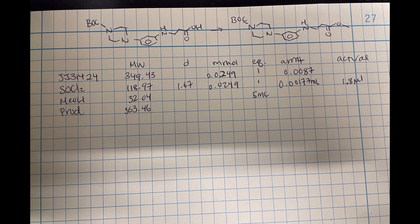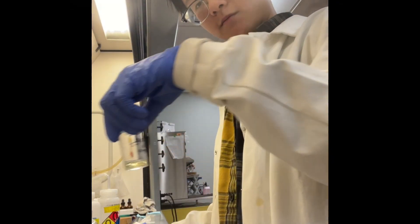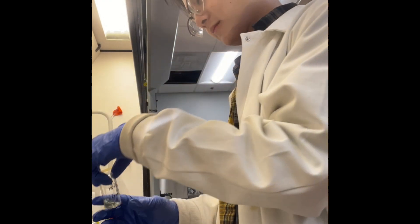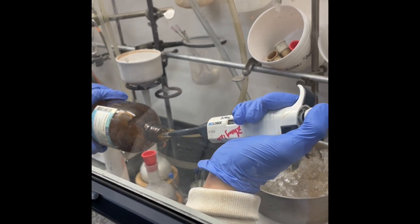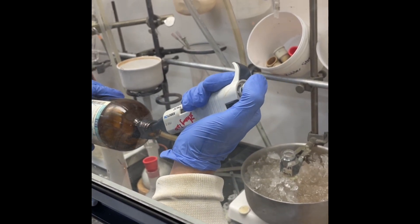So this is a day in my life. I start off the day by prepping my reaction — finding out the amount that I have, which can be converted to millimoles, and finally that can be used to calculate how much of each other material I must use. Then this is me diluting my starting material in methanol and adding thionyl chloride to the starting material while it is on an ice bath.